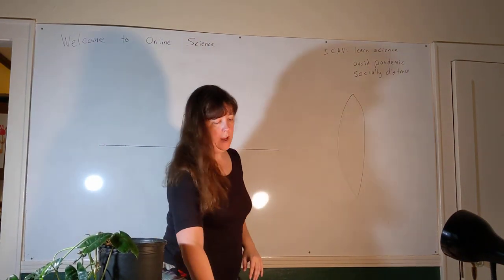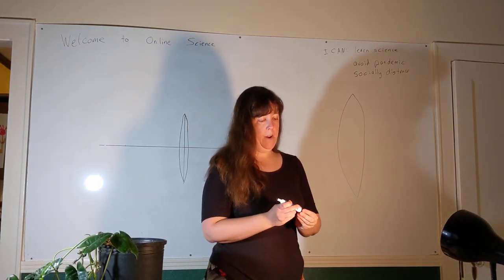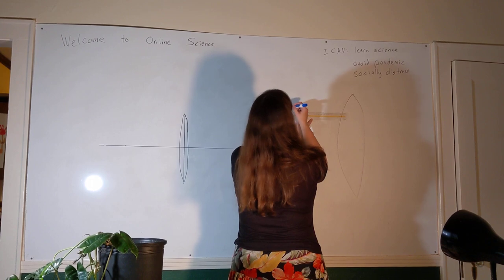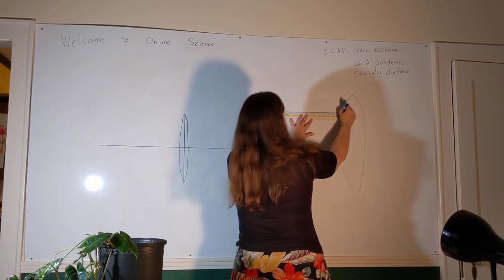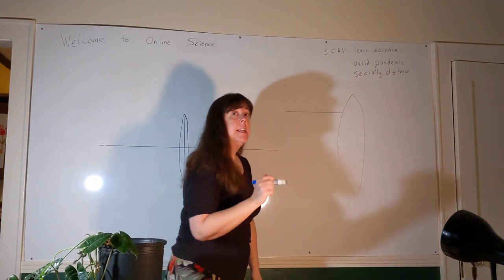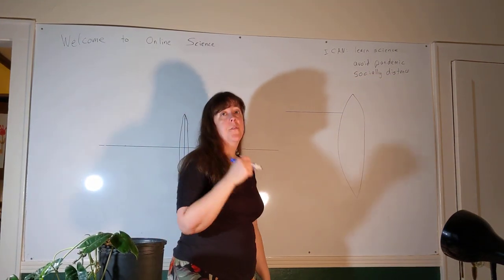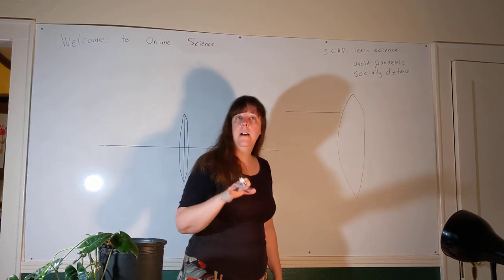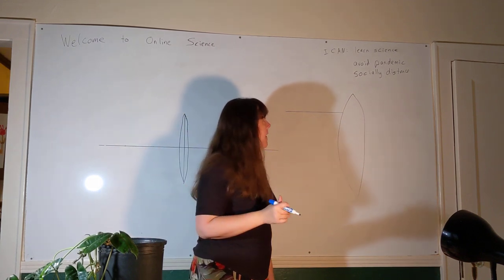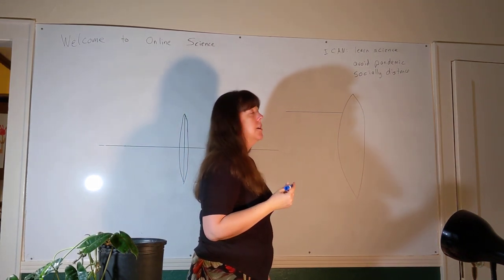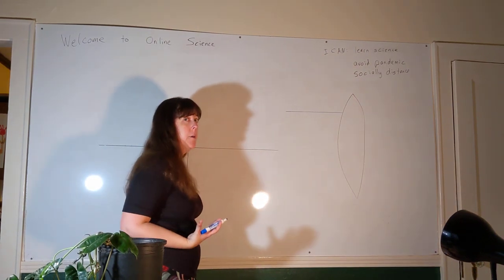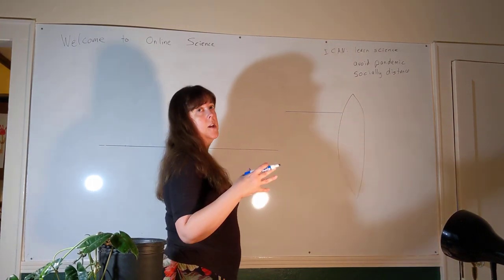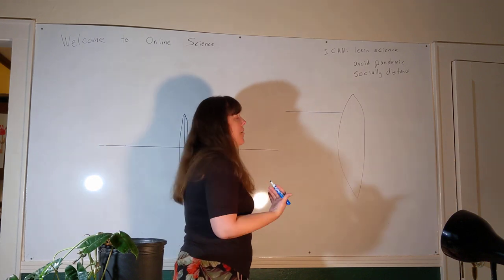I want to look at this blown-up version of a lens and think about what happens to the light ray as it goes through. When it hits the surface of the lens, it's going to bend — the light ray is going to refract because it's traveling into a new medium. When light rays hit a mirror, they bounce; when light rays hit a lens, they bend. We know how it bends from Snell's law: n1 sin θ1 equals n2 sin θ2.